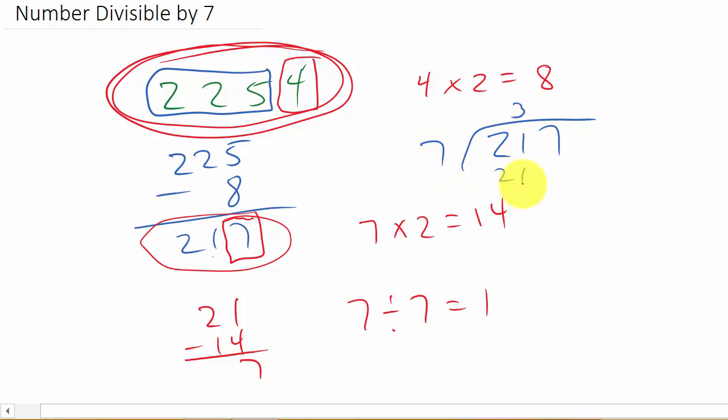So that would be 3, 21, 0, bring down the 7. 7 goes into 7 one time. That's 7. You have a remainder of 0.